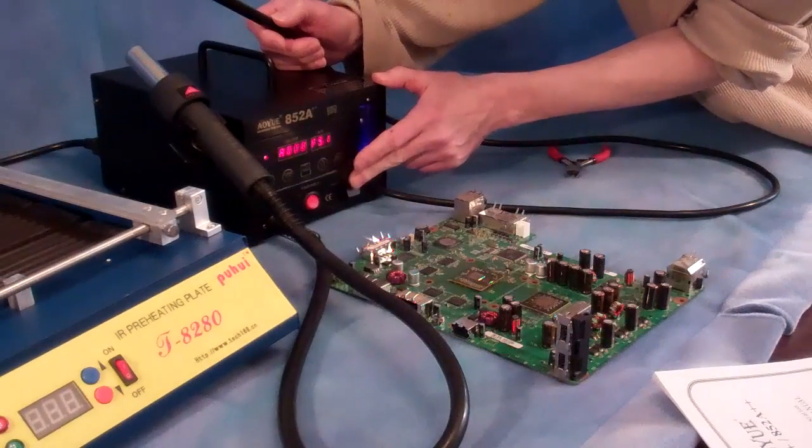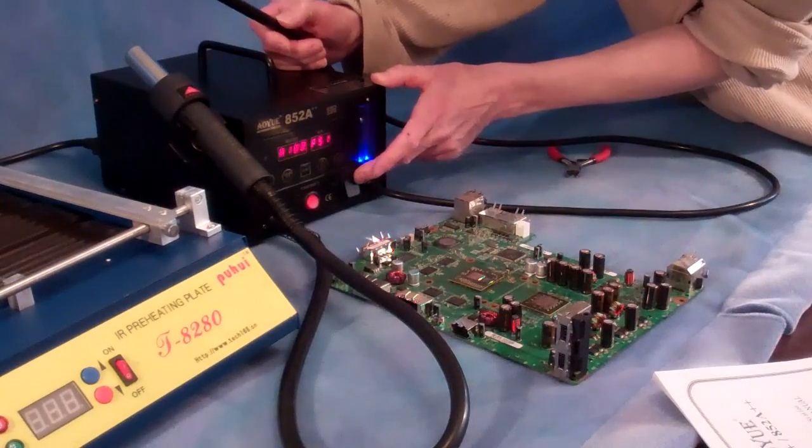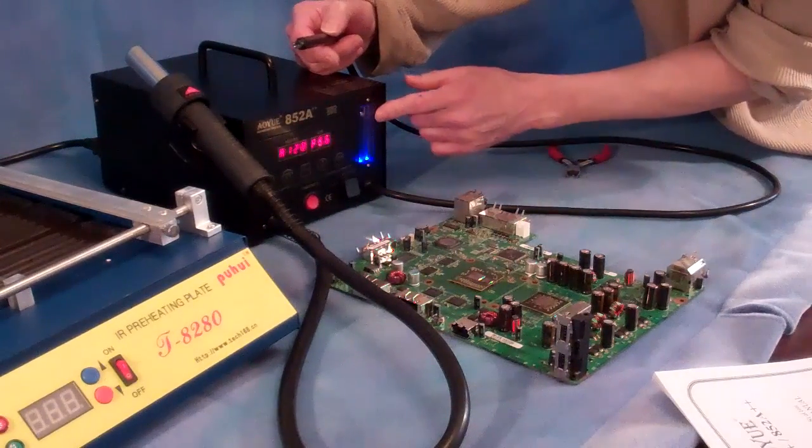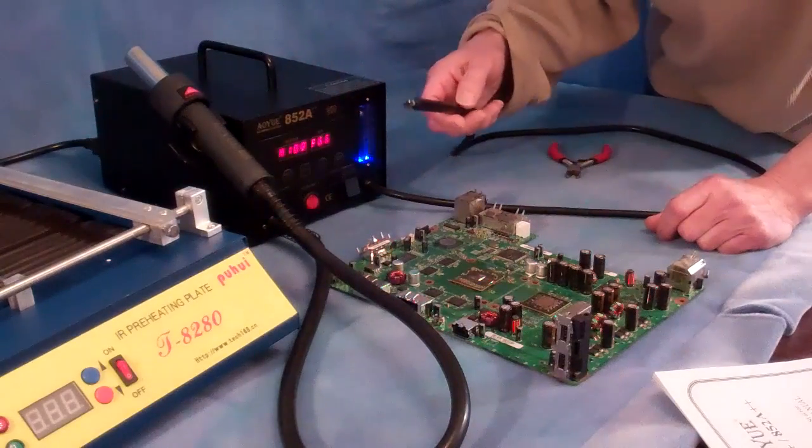Now with the unit on, you're going to turn your vacuum and your hot air gun on, which is going to operate your vacuum pen attachment. Turn your air pressure up until you have the ball at about 5 for using the vacuum pen.